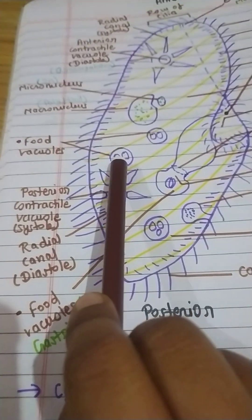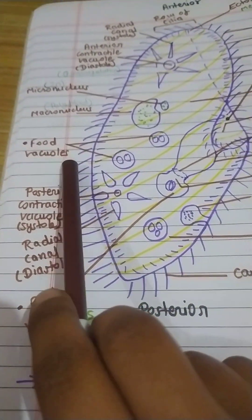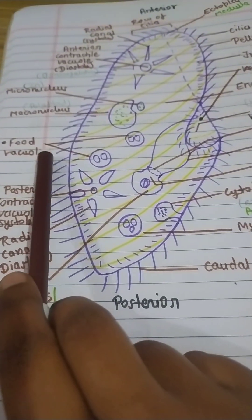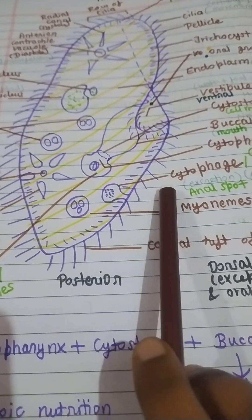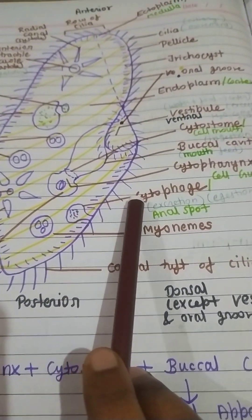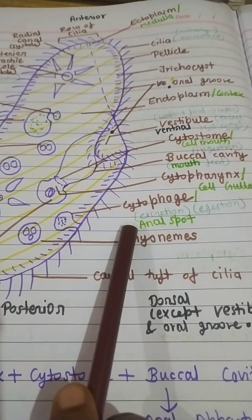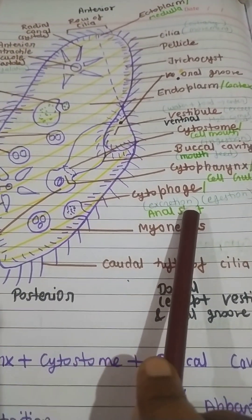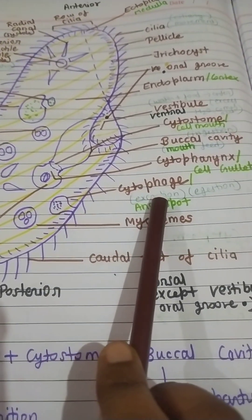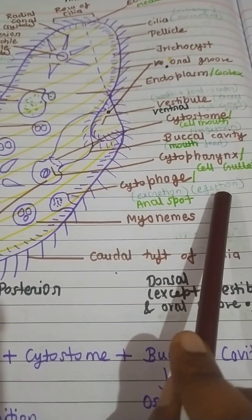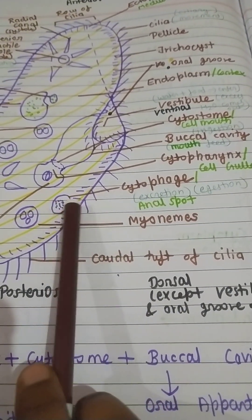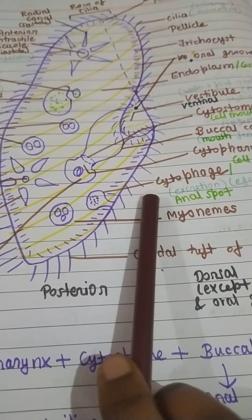From the cytopharynx, food vacuoles are generated in the paramecium. After the food particles are processed, excretion and ejection of food particles with water occurs from the cytopyge, which is also known as the anal spot.